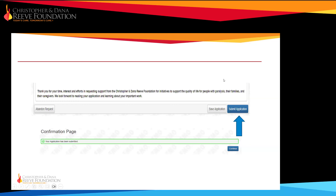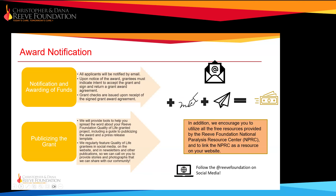You can save your application and return to it at a later time, or submit it and receive a confirmation email from the system. All applicants will be notified by email. If awarded, you'll receive a notice of award and an intent to accept the grant. Once completed and returned, you'll receive a grant award agreement to sign — checks are issued once we receive the signed agreement. We will also send press materials and media releases on how to publicize the grant, and we often feature Quality of Life grantees on social media, our website, and newsletter.